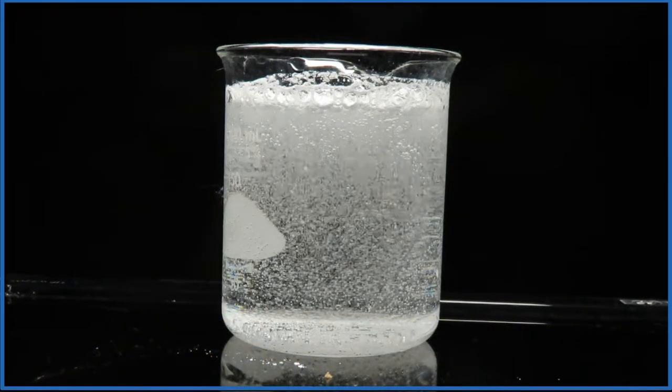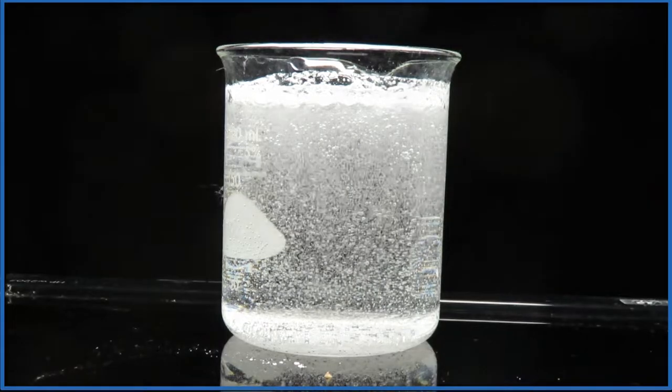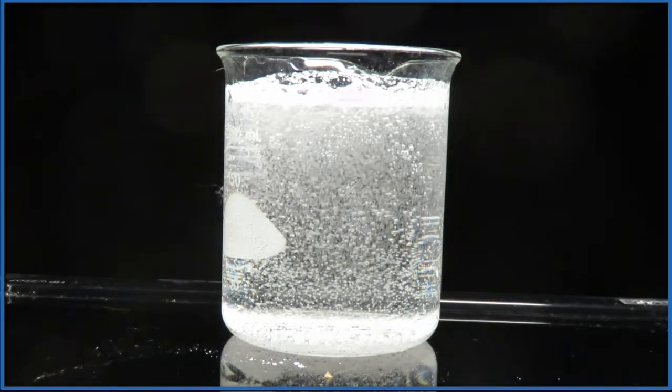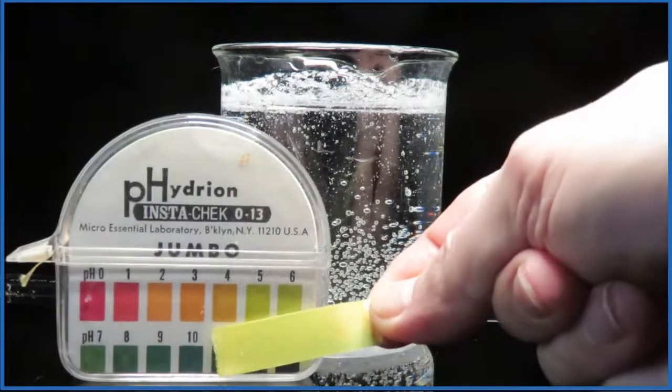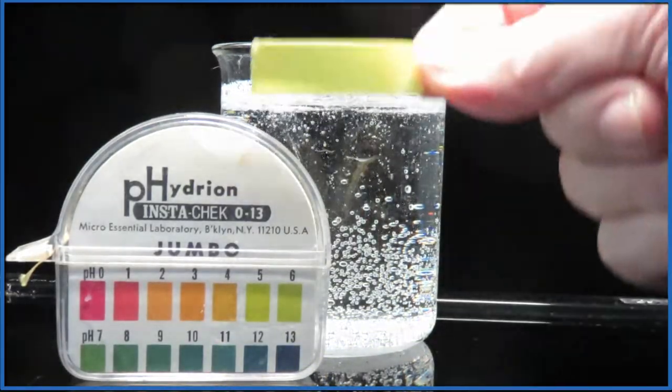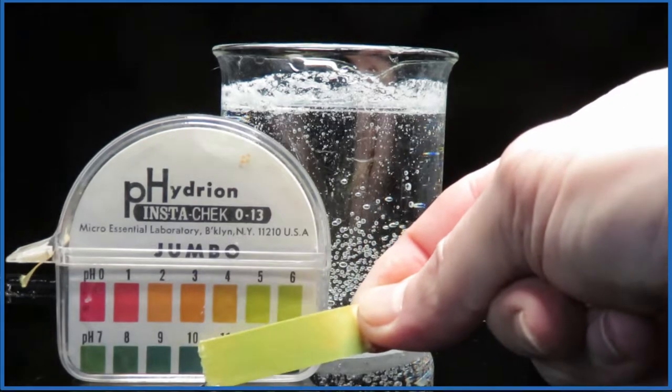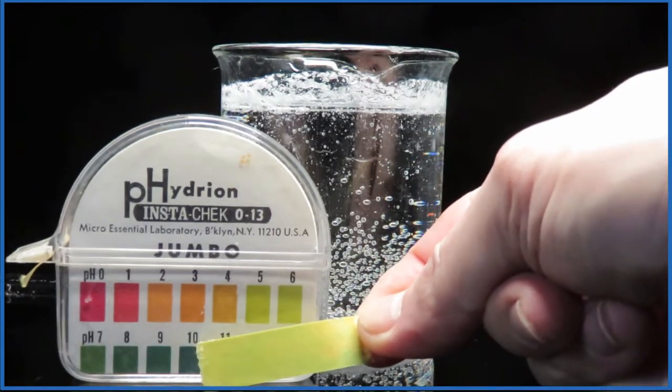If I put a piece of pH paper in with the Alka-Seltzer, once it's done reacting, I can figure out the pH fairly accurately. So you put the pH paper in, and it's kind of this greenish color. It looks like, according to the scale, about pH of 5 or 6.